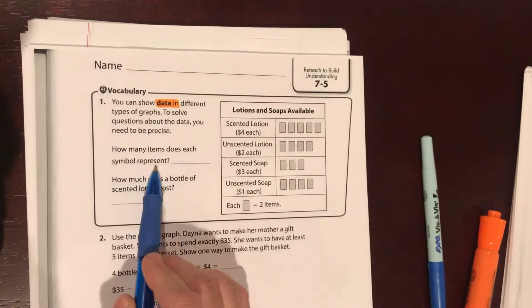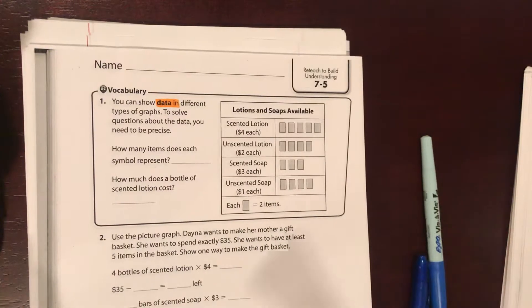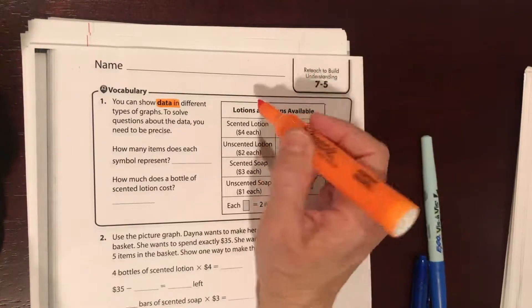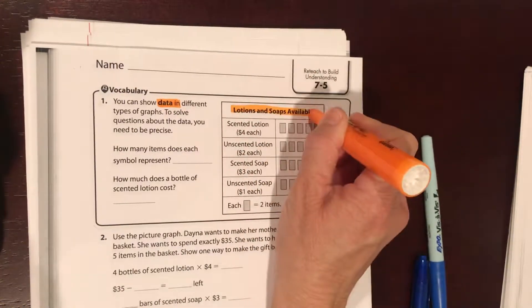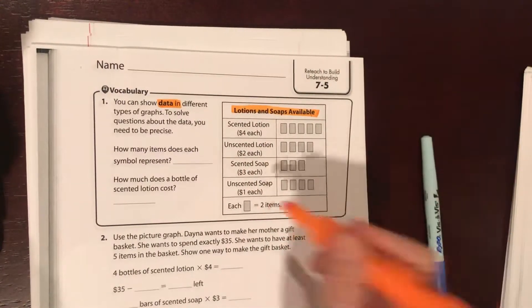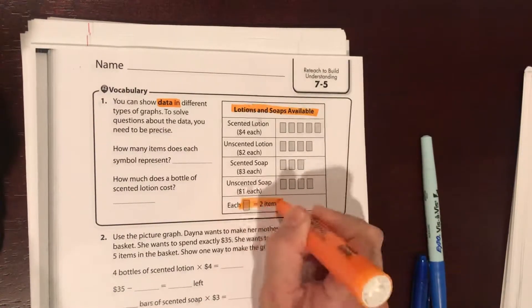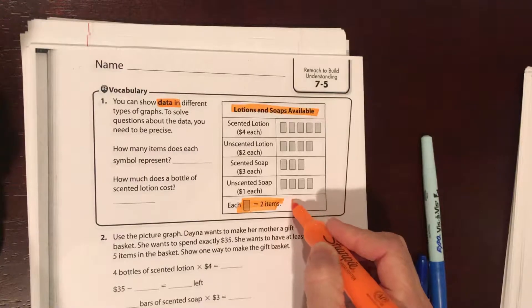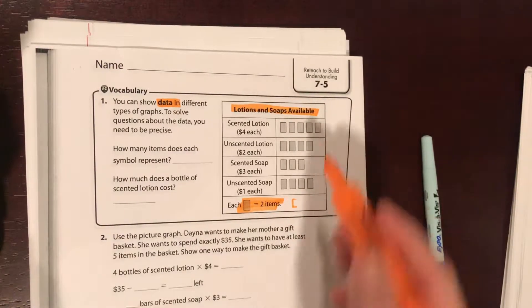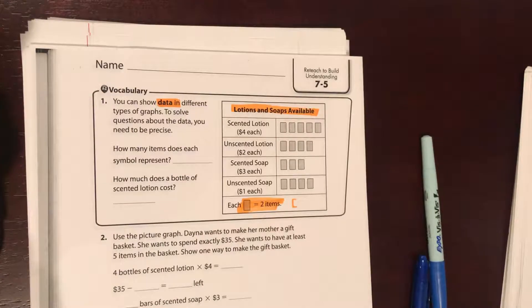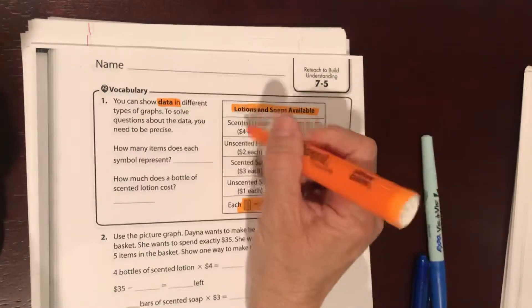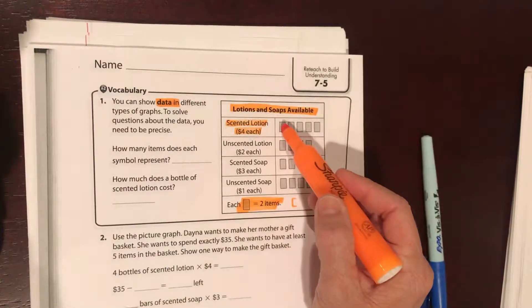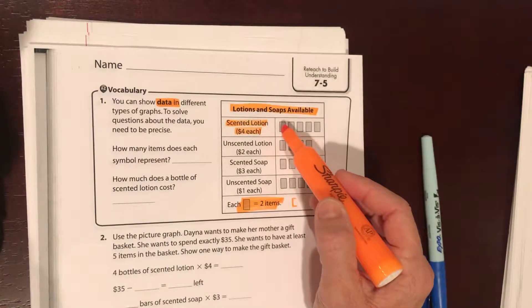How many items does each symbol represent? We have a graph, we have to look at the title, figure out what information is being displayed. Lotions and soaps available. Each bar of soap equals two items, which means if we had like a little half bar of soap that would equal one item, but we don't seem to have that so that's okay.